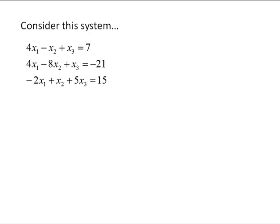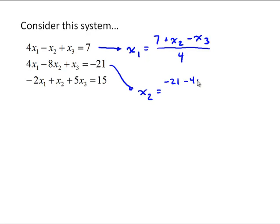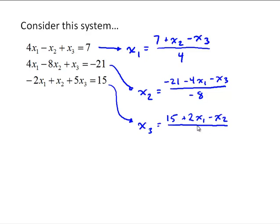Let's start by looking at this example system of equations. We can set up an iteration scheme as follows. We can take the first equation and solve that for x1, so we get x1 equals 7 plus x2 minus x3 over 4. Solve the second equation for x2, so x2 equals negative 21 minus 4x1 minus x3 divided by negative 8. And solve the third equation for x3, so we get x3 equals 15 plus 2x1 minus x2 all over 5.